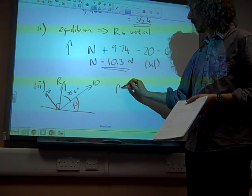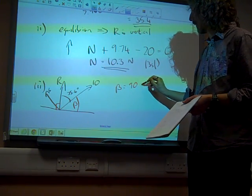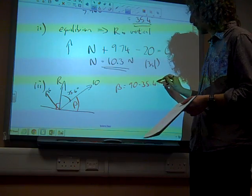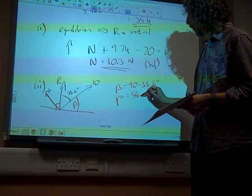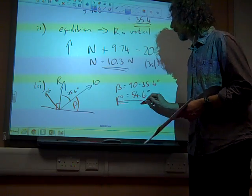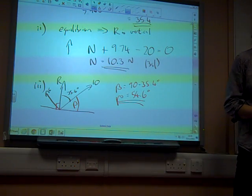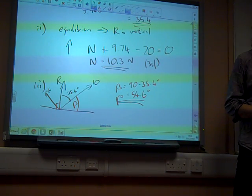So beta is 90 minus 35.4. So beta is 54.6 degrees. And that causes that angle there. Okay.